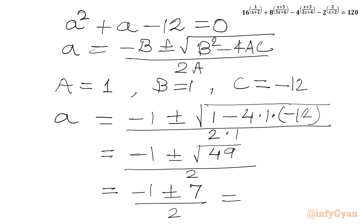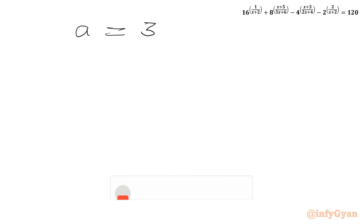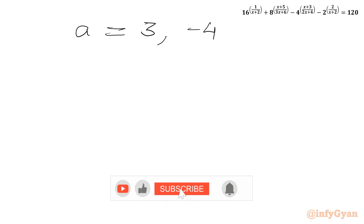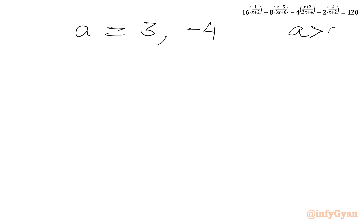So 6 over 2 is 3, and minus 1 minus 7 is minus 8 over 2, which is minus 4. So here we have two values of a: a equal to 3 and negative 4. For real x, a must be positive. On this ground I will reject minus 4. So a will be 3 only.